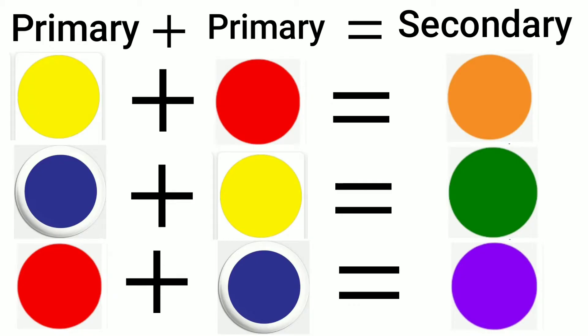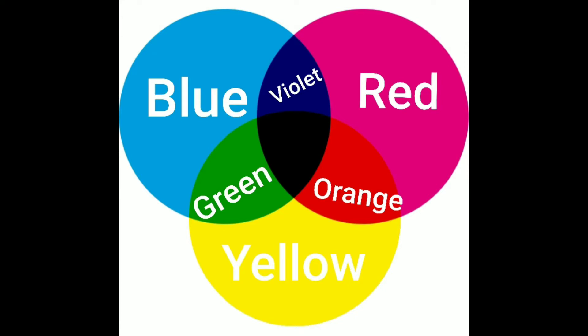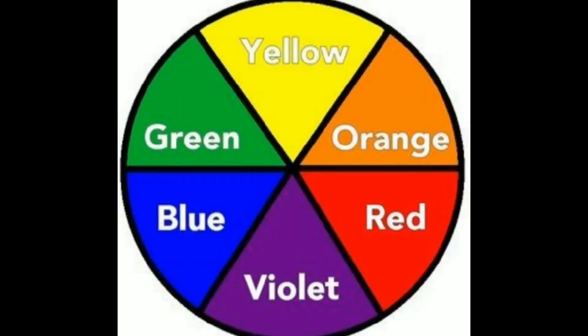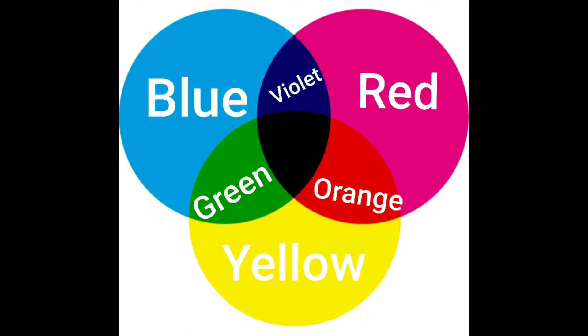The blue, the red, and the yellow are the primary colors. Combination of two of the primary colors will result in secondary colors — primary color plus primary color equals secondary color. For instance, mix red and yellow to get orange. Combine blue and yellow to get green. Blue and red produce violet.